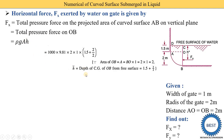Next, we find H-bar, which is the depth of the centroid (CG) of OB from the free surface. OB is a rectangle with height 2 meters, so its center is at 1 meter from O. The distance from the free surface to O is 1.5 meters. Therefore H-bar = 1.5 + (OB/2) = 1.5 + 1 = 2.5 meters. Now computing Fx: 1000 × 9.81 × 2 × 2.5 = 49,050 Newtons.